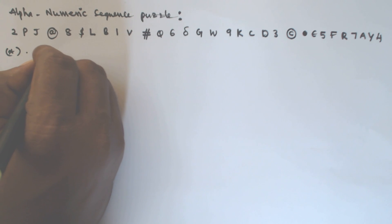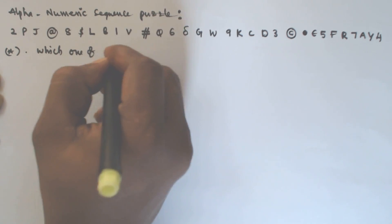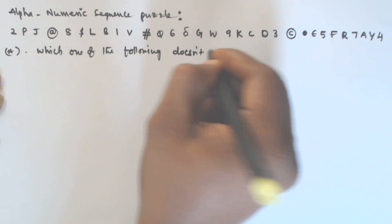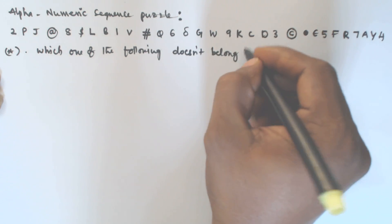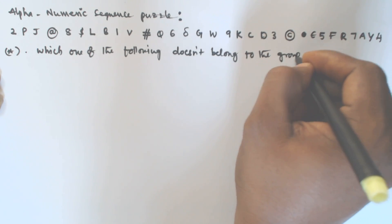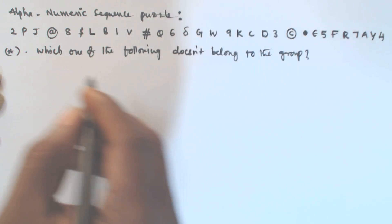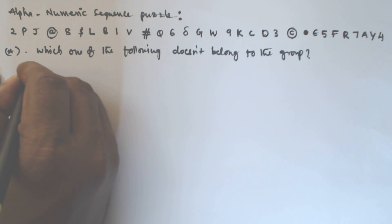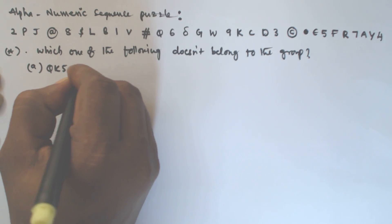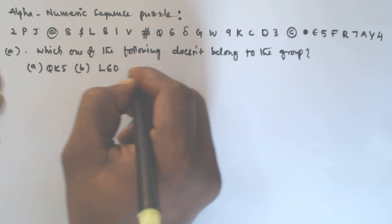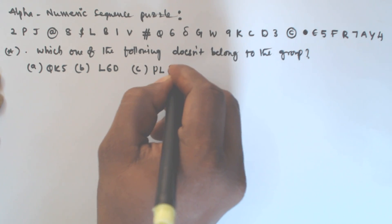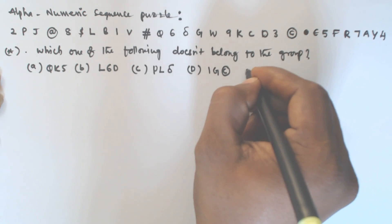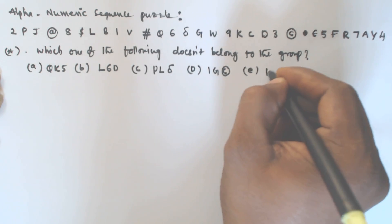Question 1: Which one of the following does not belong to the group? That means out of the given options, all are similar and one is the odd man out — that one we have to find. Option A is Q K 5, option B is L 6 D, option C is P L γ, option D is 1 G ©, and option E is K € 4.